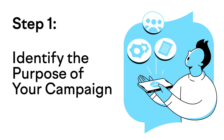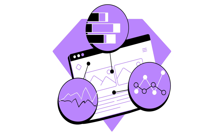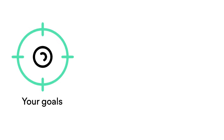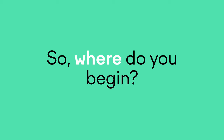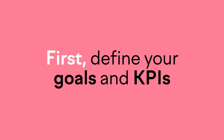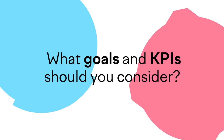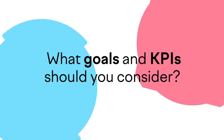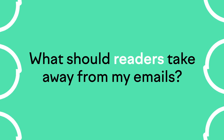Step one: identifying the purpose of your campaign. As with any marketing campaign, you'll need to have a plan in place, and it involves more than deciding how many emails you should send each week. You also need to know your goals, what you're selling, and who your target audience is. First, define your goals and KPIs. No marketing campaign is worth anything without knowing what defines success. As for less measurable but still important goals, ask yourself: what do I hope to accomplish by organizing my campaign? What should readers take away from my emails?